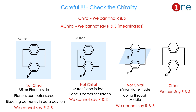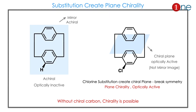Now, how is chirality created? Substitution creates the chirality. In the first compound a chiral plane exists but symmetry is intact, so we cannot say R and S. In the second compound, the chlorine substitution destroys or breaks the symmetry, creating chirality. The chirality is created by the whole plane being chiral — that is why it is called plane chirality. The important point is that chirality is possible even without a chiral carbon.